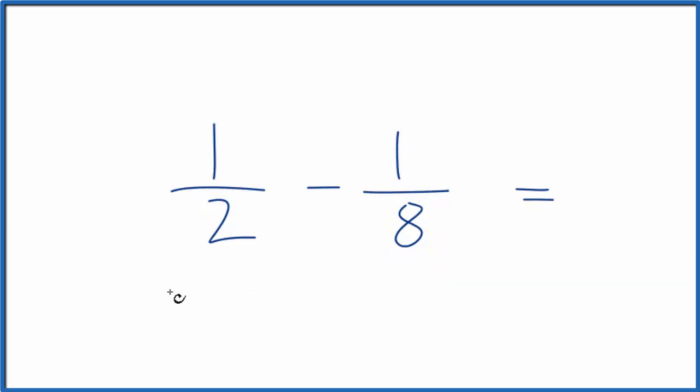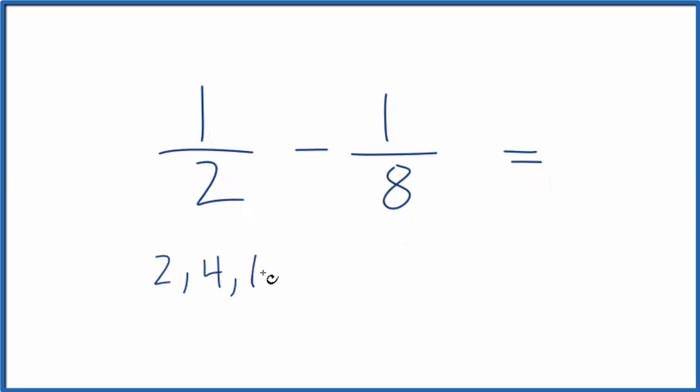If I look at the multiples of two: two, four, six, eight. So eight is actually the lowest common multiple.